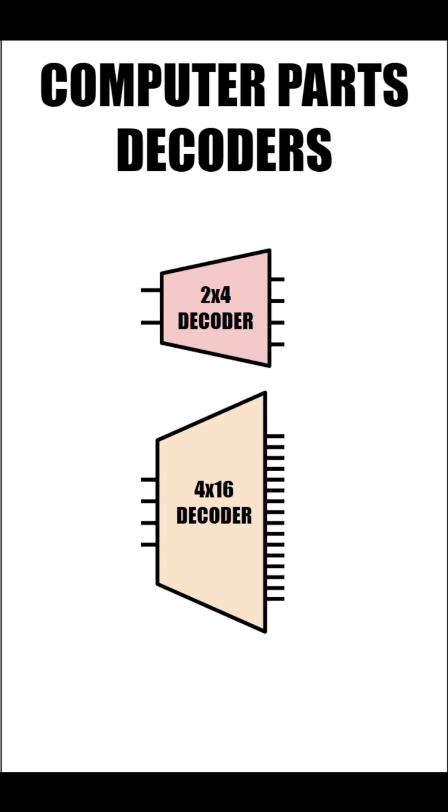Let's look at decoders. Decoders take a small number of inputs and map it to one of a larger number of outputs. But let's start from the beginning.